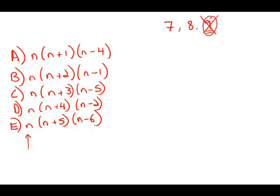First, plugging in to A. If I plug in n equals 7 in A, what I get is 7 times 7 plus 1, which is 8, times 7 minus 4, which is 3. I don't need to multiply that out. It has a factor of 3, so that is divisible by 3.